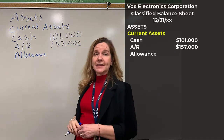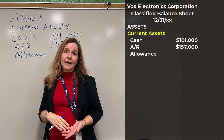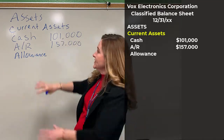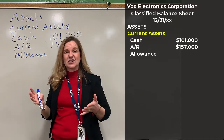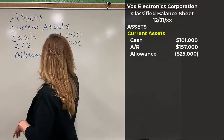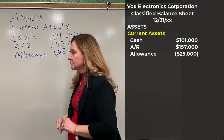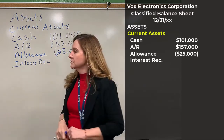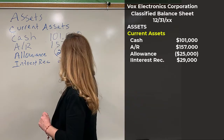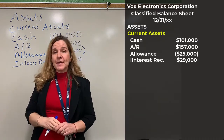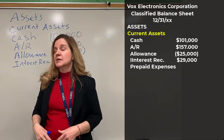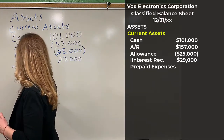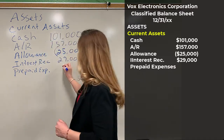The allowance for bad debt is a contra account, so it has a normal credit balance. We put it on the balance sheet as a negative number — that doesn't mean it's actually a negative balance, it just means it's among accounts with debit balances but it carries a credit balance. So we put it down as negative using parentheses. The next one we list is interest receivable for $29,000. Then we have a prepaid expense that covers next year, so it is a current asset for $33,000.